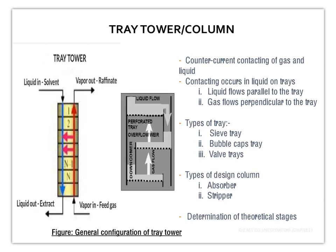Let's look at the tray tower diagram. As we can see here, we are dealing with counter-current contacting of gas and liquid. The gas is fed at the bottom of the column and liquid is fed at the top of the column. This is the general configuration of the tray tower, where the liquid and gas will be in contact with each other, and the contacts occur on the tray.